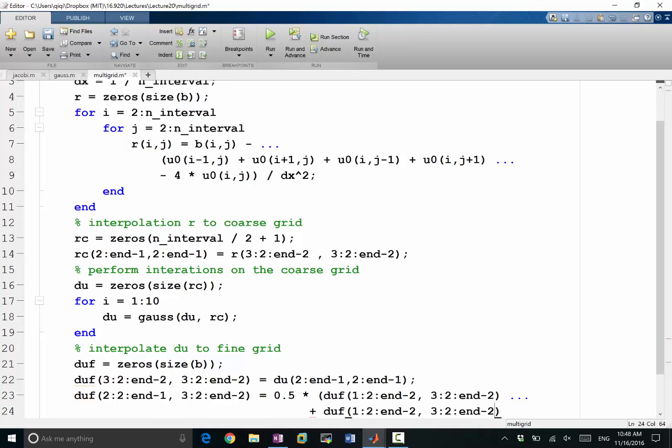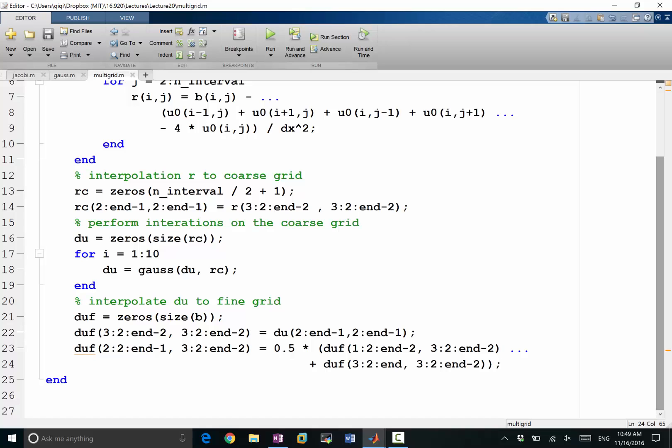Plus my du_f at 3:2:end. So this is my interpolation in the x direction. Now I have all the values at every i direction at all the i directions, but at every other j direction I want to interpolate in the j direction. So du_f, now every j direction is filled 2:2:end-1, in the j direction I want to follow the same formula: du_f column 1:2:end-2 plus du_f 3:2:end. That completes my interpolation of du to the fine grid.